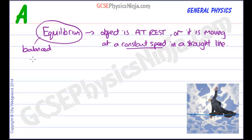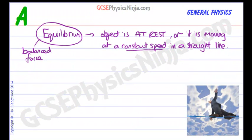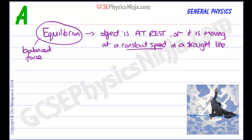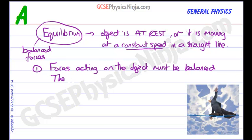There are balanced forces, and that's the first requirement for a body to be in equilibrium. The first condition is that the forces acting on the object must be balanced. In physics, we say that there is no resultant force.